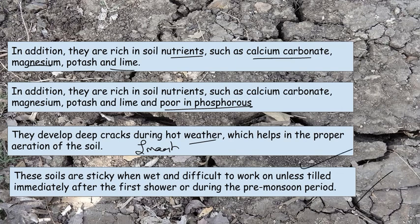You can see cracks in the background image — when it is hot weather you will get cracks in black soil. These soils are sticky when wet and difficult to work unless tilled immediately after the first shower or during pre-monsoon time. If we plow before or right after the first shower, cultivation becomes tough.